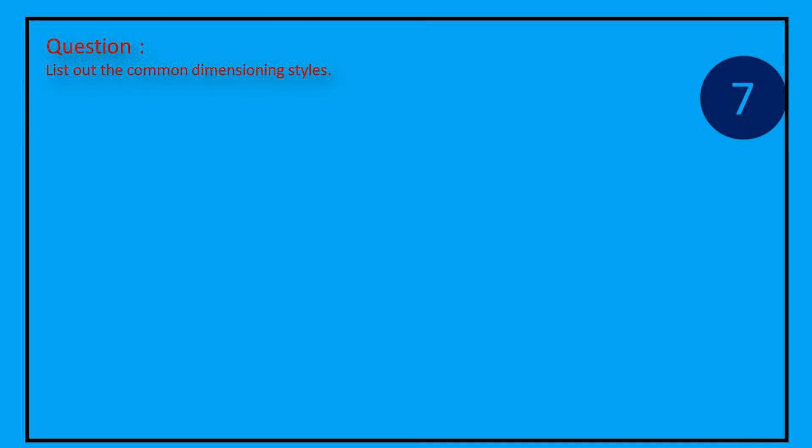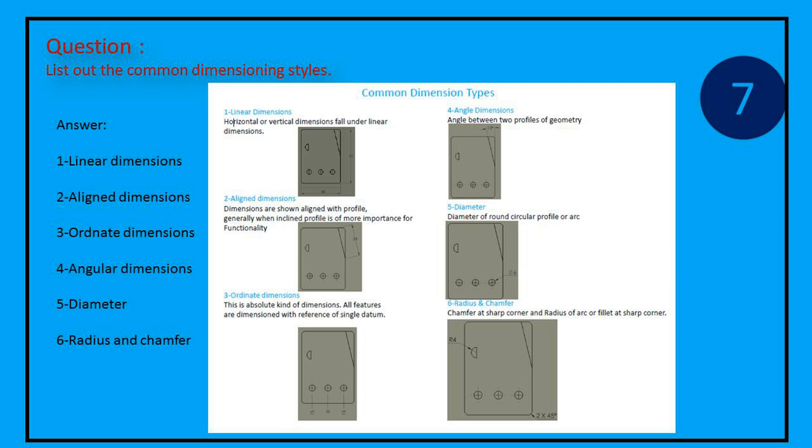Question: List out the common dimensioning styles. Answer: Following are styles: Linear dimensions, Aligned dimensions, Ordinate dimensions, Angular dimensions, Diameter, Radius and Chamfer.